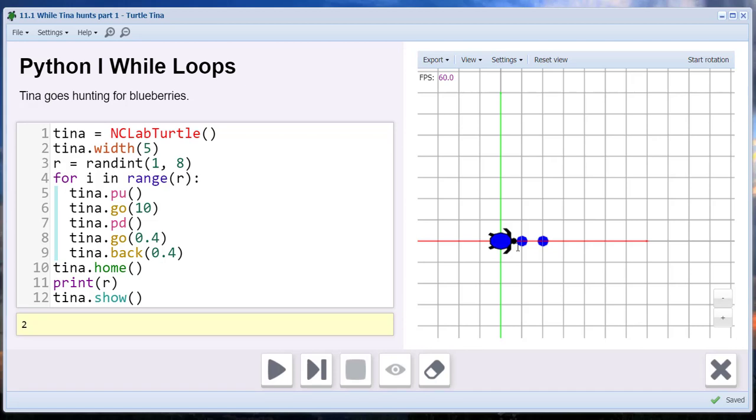We know that the first dot will always be on 10, 0, and there will always be at least one, so we can start her at that position. We also need to initiate the counting variable D before the loop and set it to 0. Within the loop, every time Tina detects a dot, the counter will increase by 1,